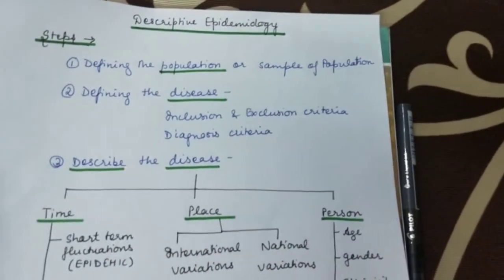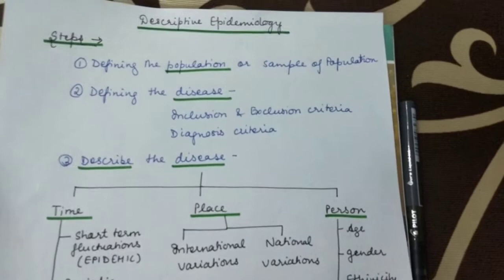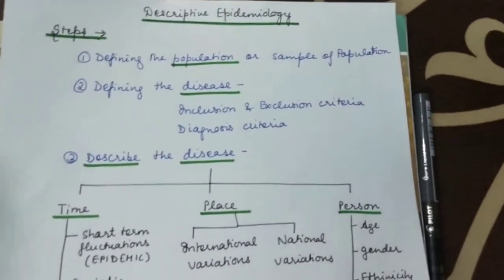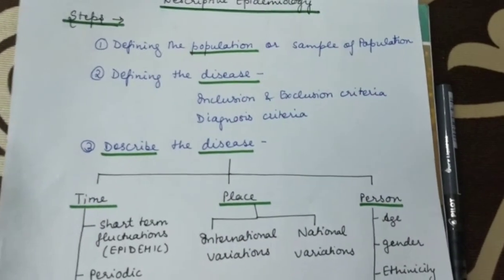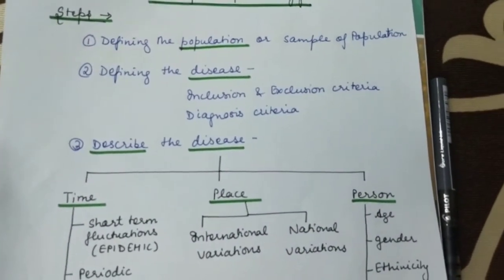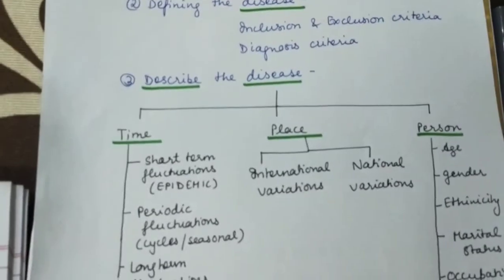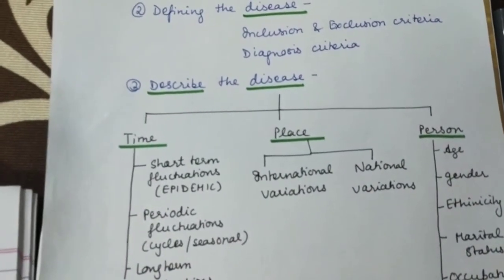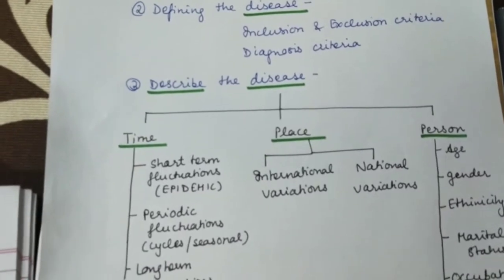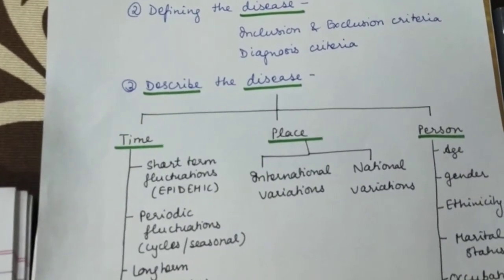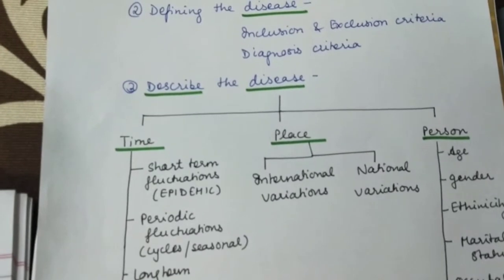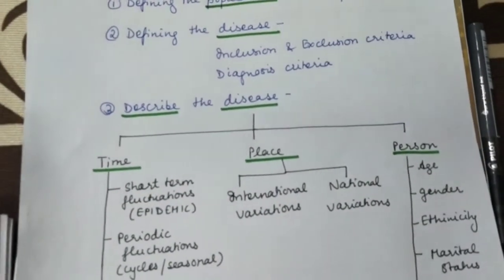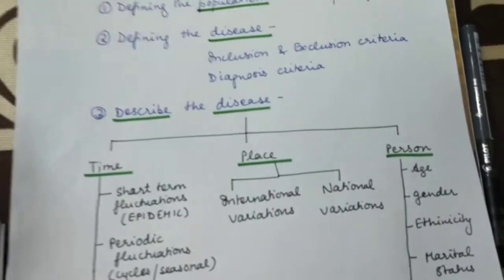You also have to give a diagnosis criteria — what are the clinical features which will decide that this is the particular disease you are studying. For that, you need to give an operational definition. An operational definition is one by which the disease or condition can be identified and measured in the defined population with a degree of accuracy.